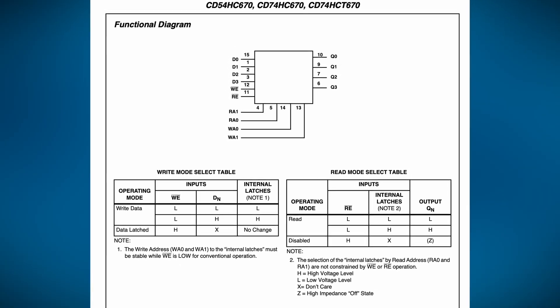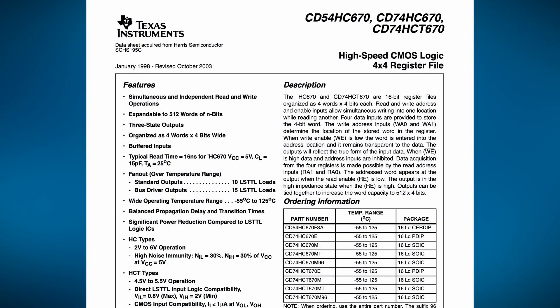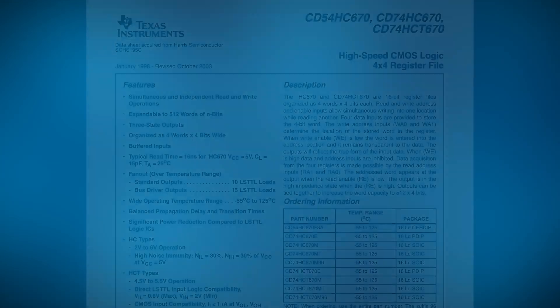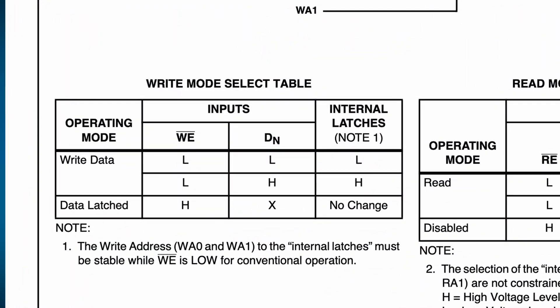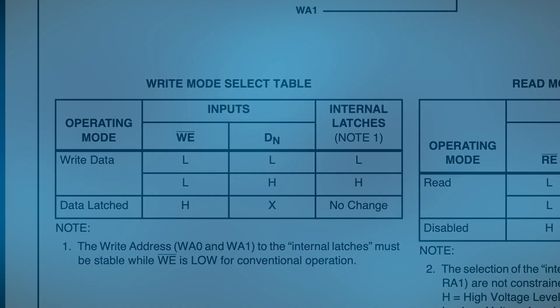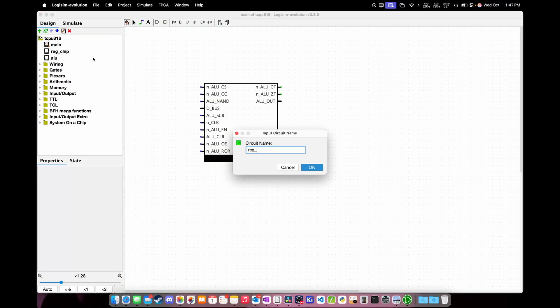There are some behaviors that we need to be aware of when using the register files. First, it behaves like a very small DDR RAM chip in the sense that it can read and write data at the same time. But this also means that the registers are not edge triggered, and this differs from the register module we created earlier. To maintain parity with the real hardware, we'll start by creating this register file as a new module. In the parts list on the left, make a new module and name it reg_file.